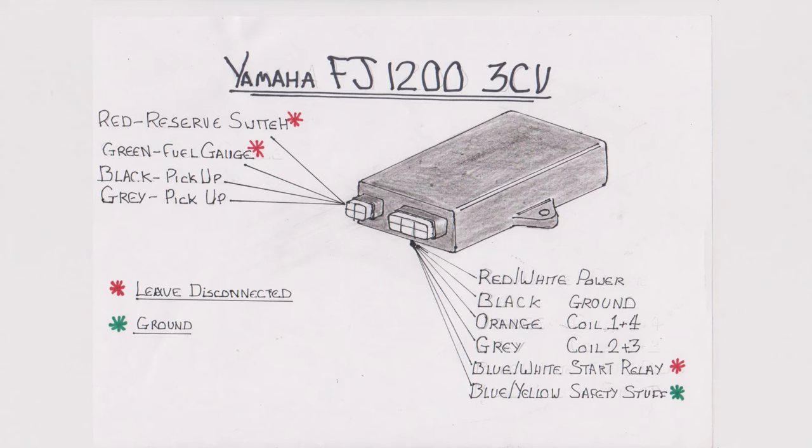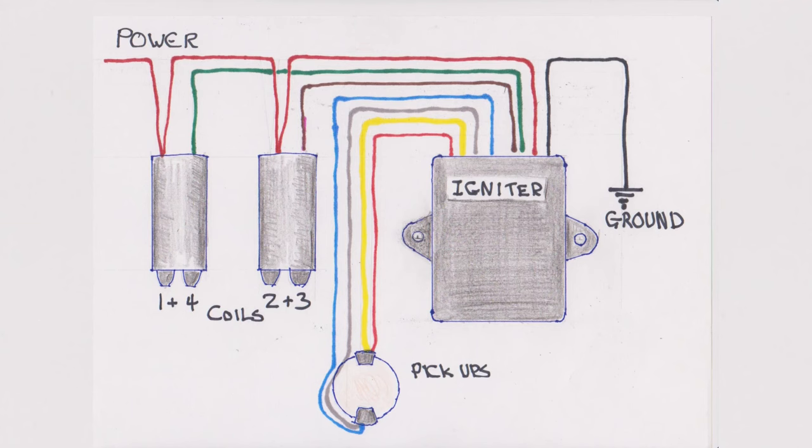As a side note, the fuel gauge is most likely connected to the igniter because the igniter is a good place to put a nine volt regulator to stabilize the fuel gauge reading. The technique then, even for things as unnecessarily complicated as the later FJ igniter, is to identify the four things you know it's going to need.